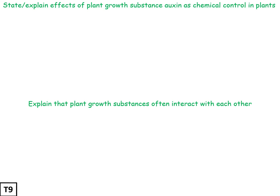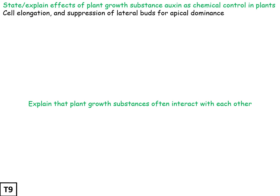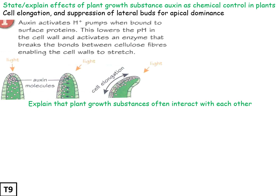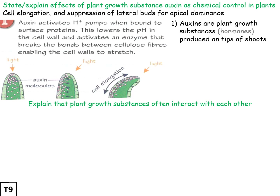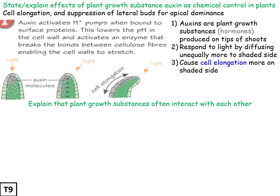Auxin causes cell elongation by allowing cell walls to stretch more - the more auxin present in a cell, the more the cell walls can stretch. Auxins are plant growth substances produced on the tips of shoots. They respond to light by diffusing unequally, moving more towards the shaded side. This causes greater cell elongation on the shaded side, so the plant shoot bends and grows towards the light, enabling more photosynthesis.